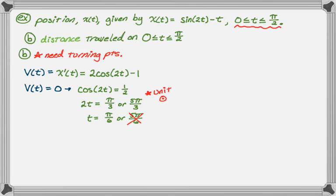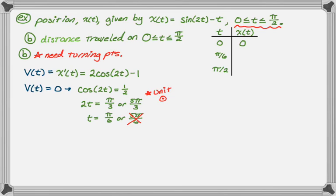Now I'll make a table with t and x(t), including the starting point, ending point, and any turning point: t = 0, π/6, and π/2. Substituting into x(t): at t = 0 we get zero. At t = π/6, we get sine of π/3 minus π/6, which is √3/2 minus π/6. At t = π/2, we already found negative π/2.